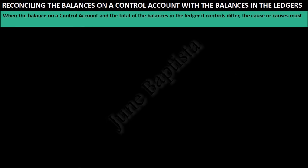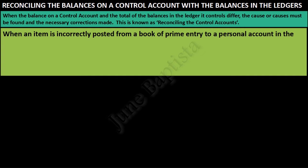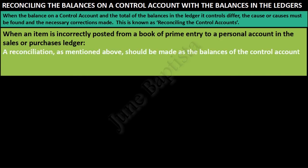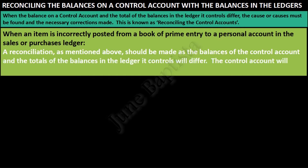Reconciling the balances on a control account with the balances in the ledgers. When the balance on a control account and the total of the balances in the ledger it controls differ, the cause or causes must be found and the necessary corrections made — this is known as reconciling the control accounts. Always remember that control accounts source their data from books of prime entry. When an item is incorrectly posted from a book of prime entry to a personal account in the sales or purchases ledger, a reconciliation should be made as the balances will differ, and the control account will reveal the error.